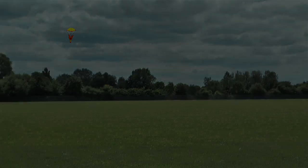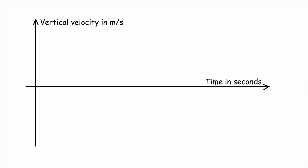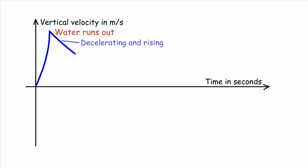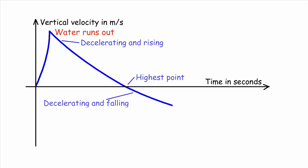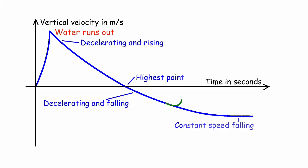Here's the A-star bit. Watch the graph to see how the unbalanced thrust force speeds the rocket upwards. Then air resistance and gravity slow it down until it reaches its highest point. Now it drops, accelerated by gravity, until the increasing air resistance balances gravity. With a parachute, the forces balance at a lower descent speed.